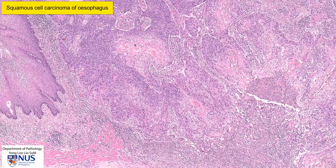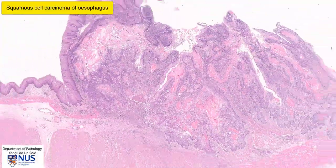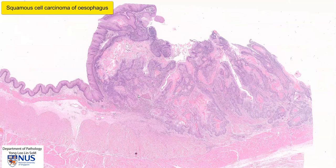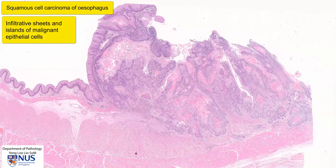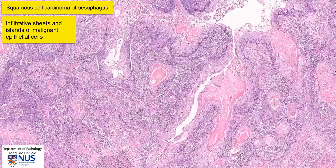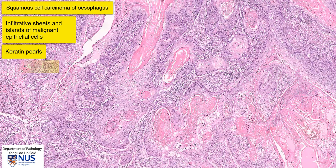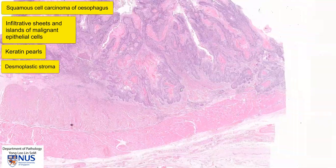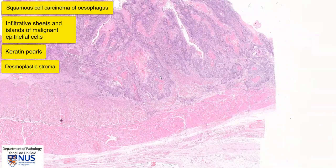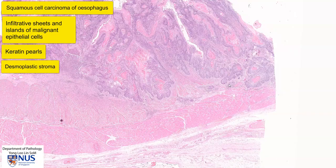In summary, we have here an invasive tumour arising in the esophagus. The tumour is composed of large sheets and islands of malignant cells with prominent keratin pearls, and there is a surrounding desmoplastic stroma. This tumour invades through the submucosa into the muscularis propria of the esophagus. Thank you.